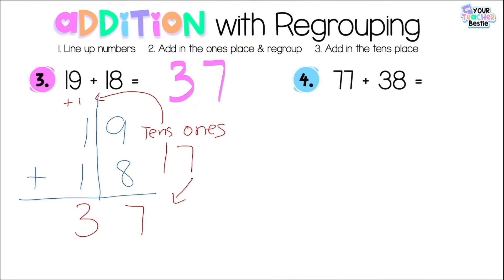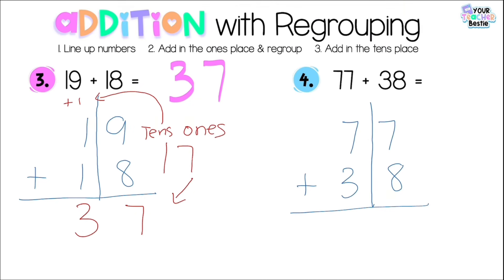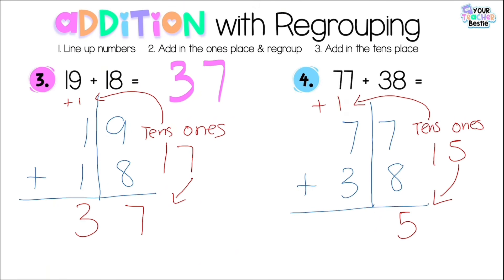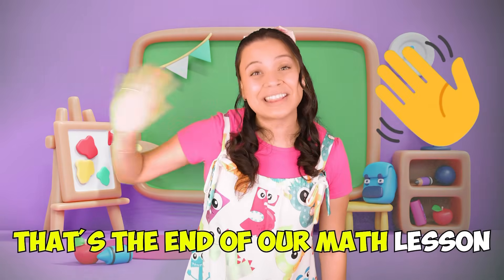Last problem, number four: 77 plus 38. I write the numbers vertically and do step two — add in the ones place. 7 plus 8 is 15, using the near-double strategy. I label the ones and tens place, bring the 5 down to the ones place, and the ten goes up to the tens place — plus one ten. Step three: add the tens. 7 plus 3 is 10, plus 1 more is 11 tens — a three-digit number in ones, tens, and hundreds place — giving a total of 115. Awesome job, besties — that's the end of our math lesson!